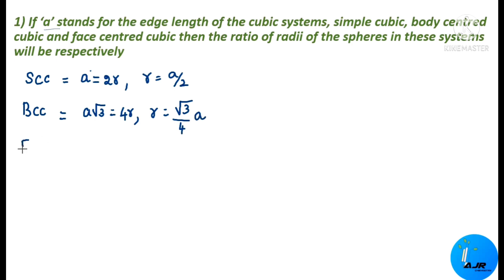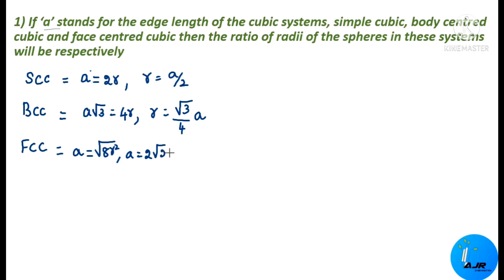The next one is the face centered cubic system. For face centered cubic, the edge length is related to R with the formula A = √2 × 8R², which simplifies to A = 2√2 × R. So when you need R, this becomes R = A / (2√2).